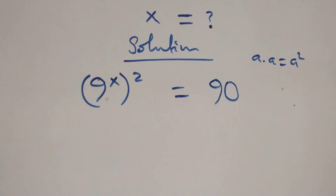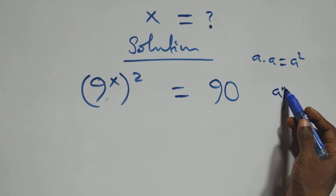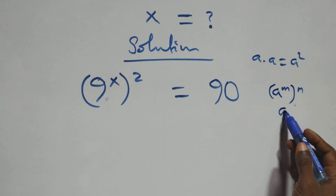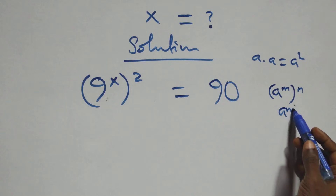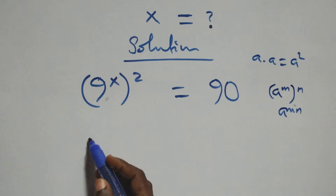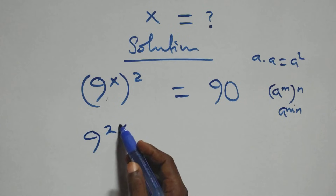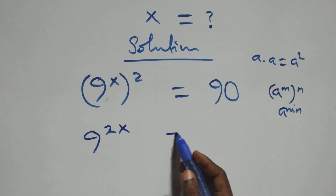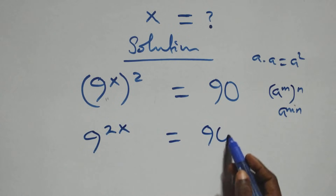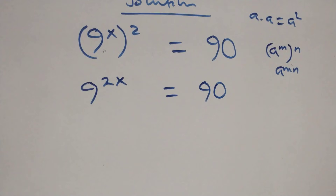It also follows that when we have a raised to power n, raised to power n, which is the same thing as a raised to power m times n. Here this power multiplies and we have 9 raised to power 2x equals to 90.